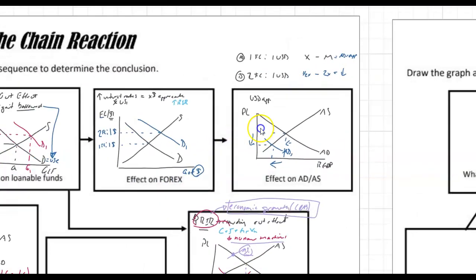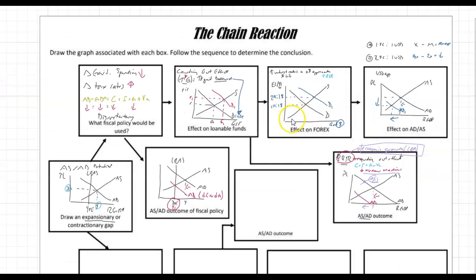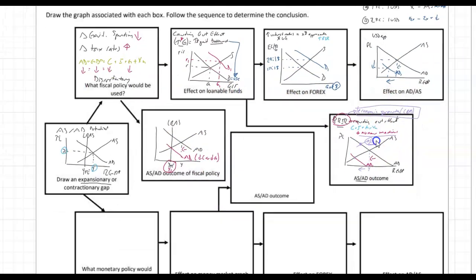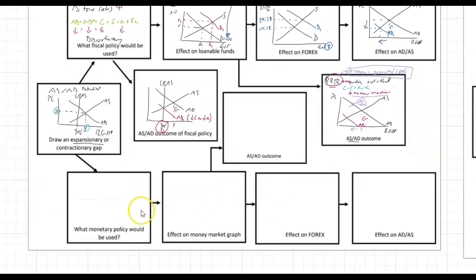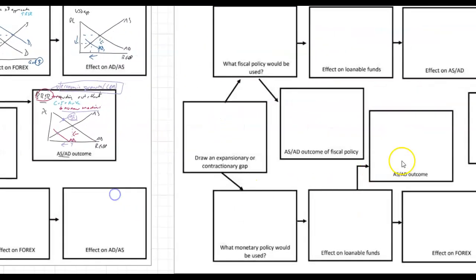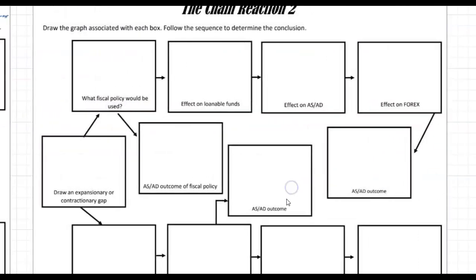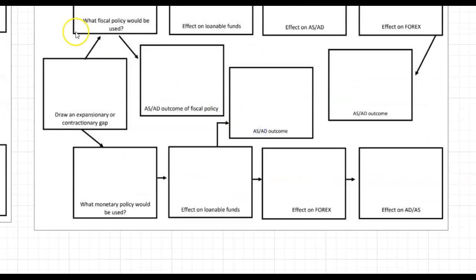So that's going to be on the expansionary side: ASAD to fiscal policy, to the implementation of fiscal policy, to loanable funds, to the Forex market, and everything else. Next time I'll look at monetary policies and how that would affect things like the money market graph, the ASAD, the Forex, and everything else. And then at some point we'll go over and do the other parts as well — you can see it goes in just kind of a different order. Until next time, bye.